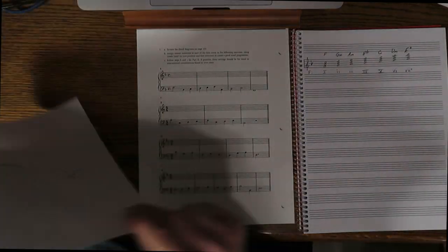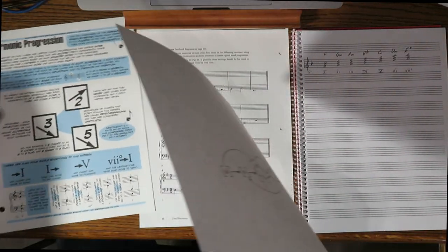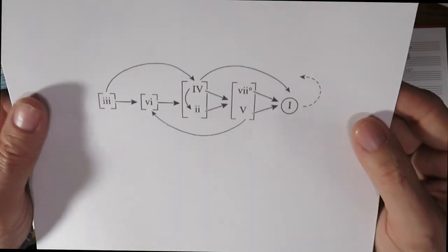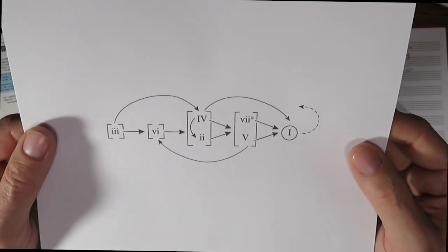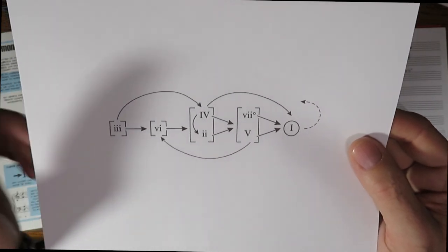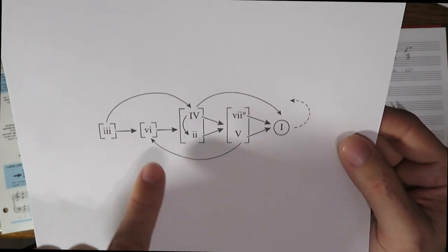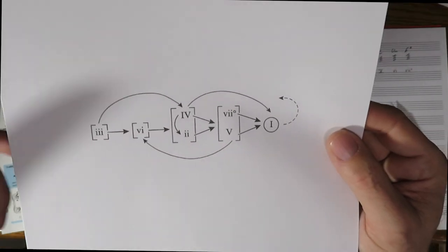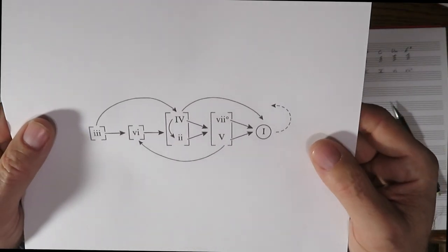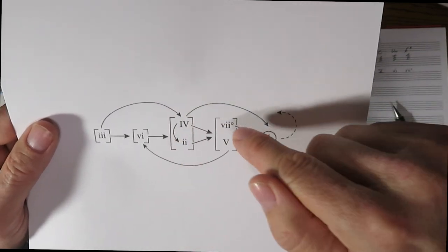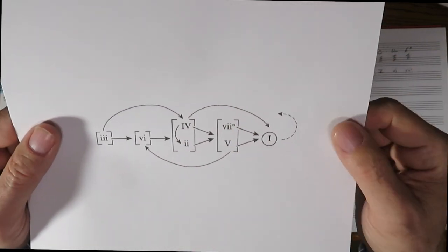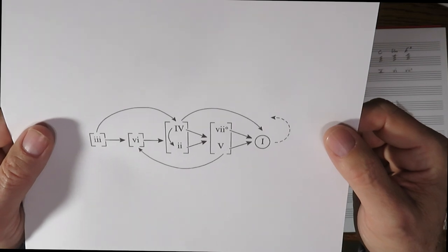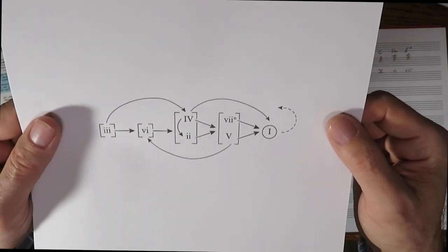We also have the harmonic progression from the book. You can see we have the three, six, two, five, one. And sometimes we like to use the four or the diminished seven. Let's get started.